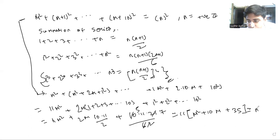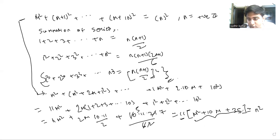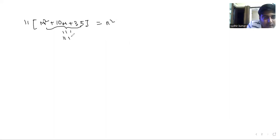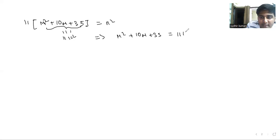This equals n², a perfect square. We see there is a factor of 11 here, so the remaining quantity must also contribute an 11 for n² to be a perfect square. Therefore this quantity must be equivalent to 11k², which implies m² + 10m + 35 = 11k².